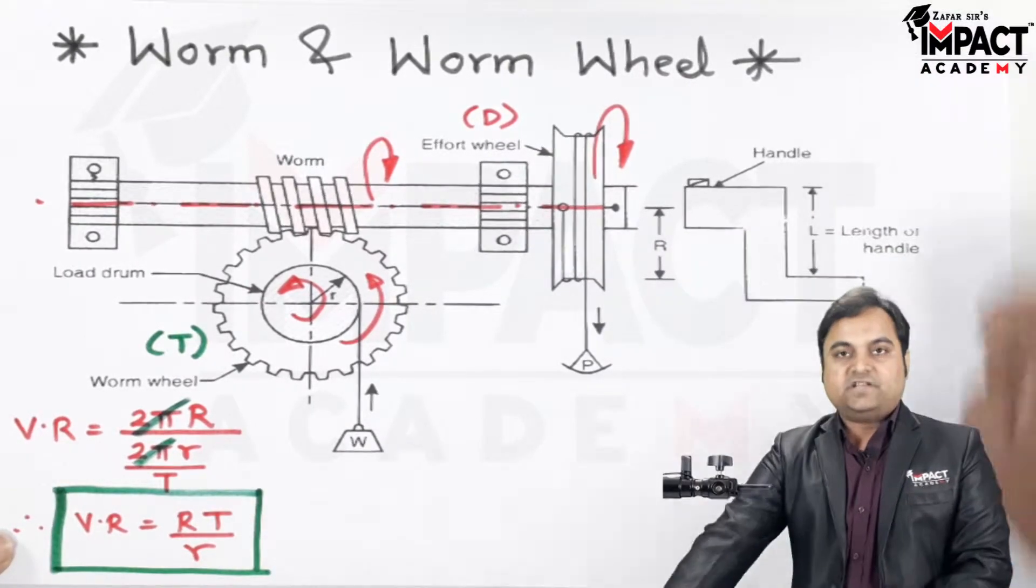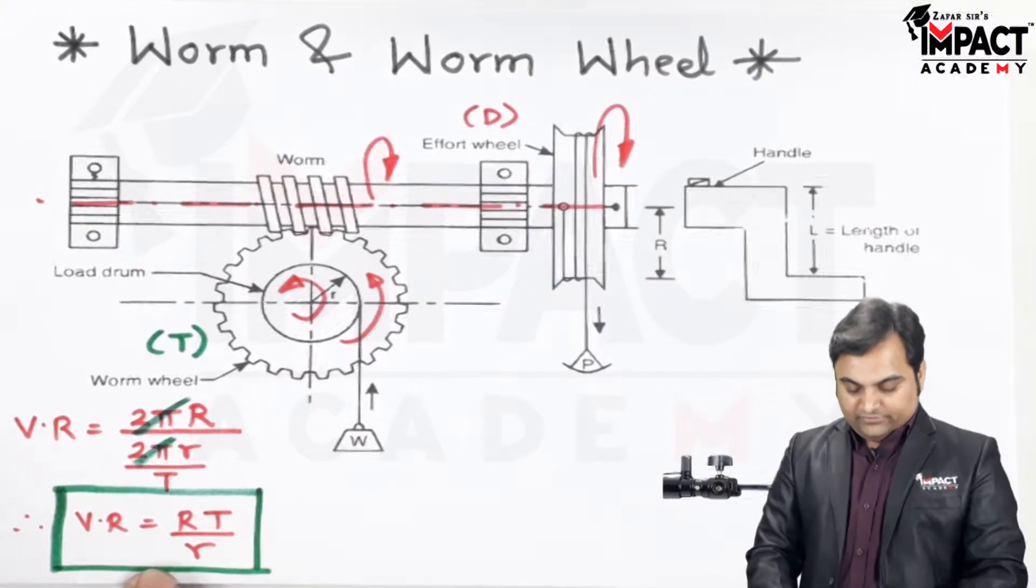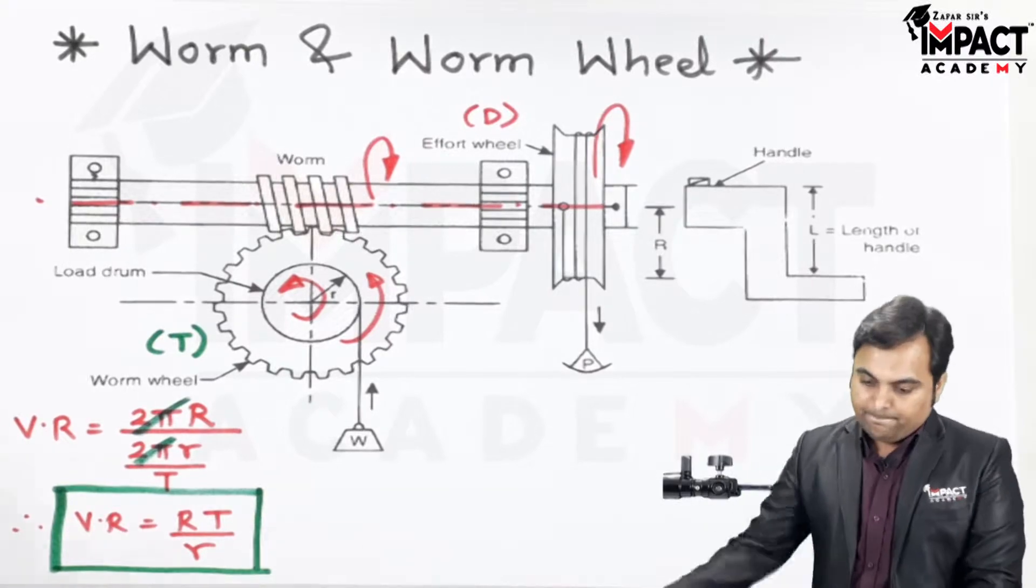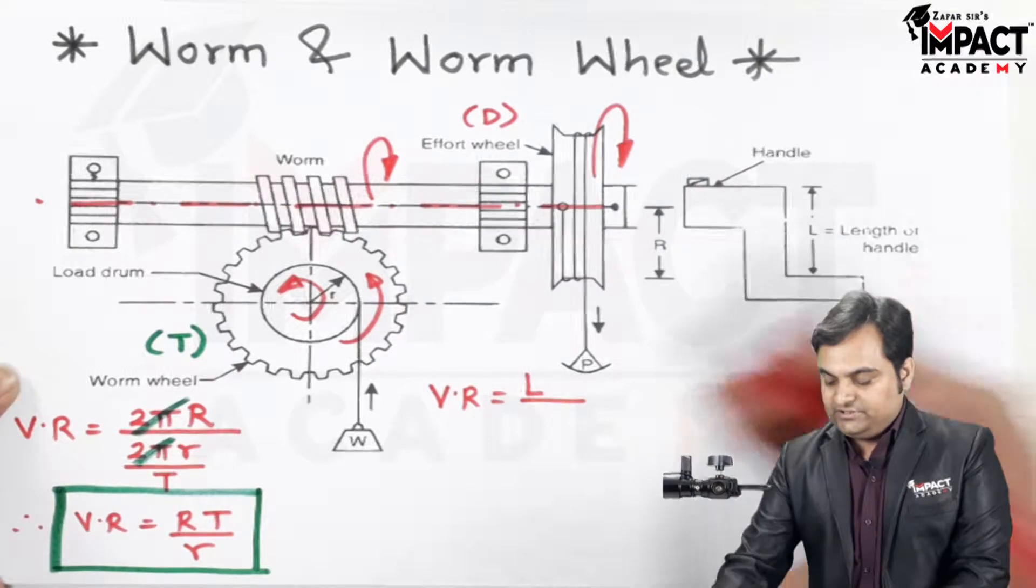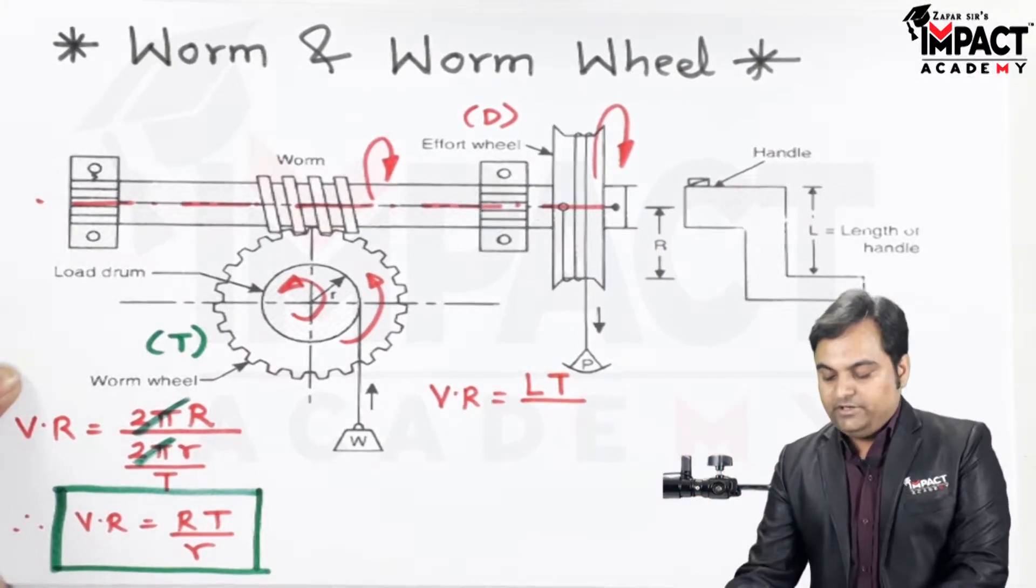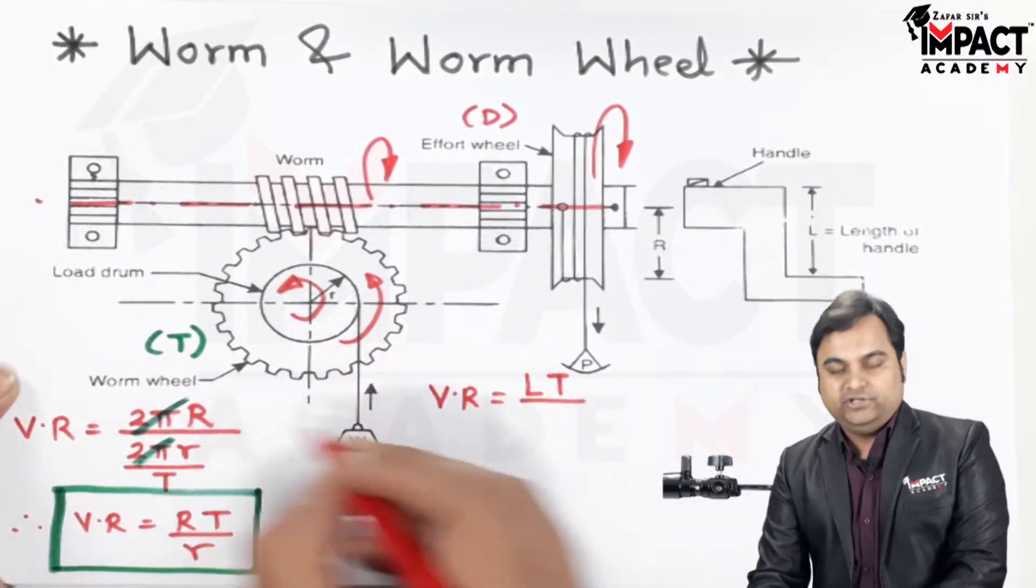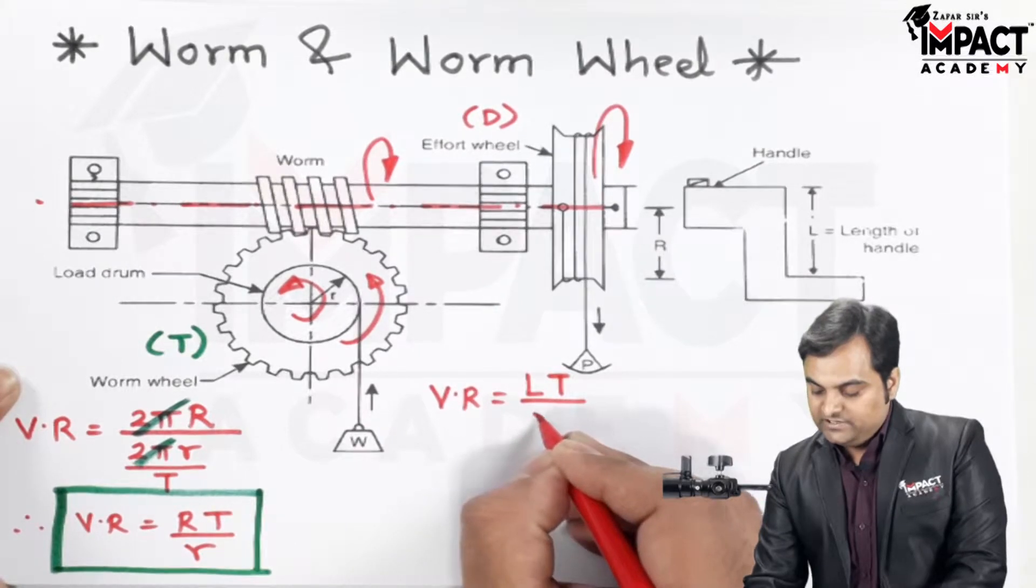this handle and rotate it. In that case, the velocity ratio formula would be the length of the handle times T, which is the number of teeth on the worm wheel, divided by small r,